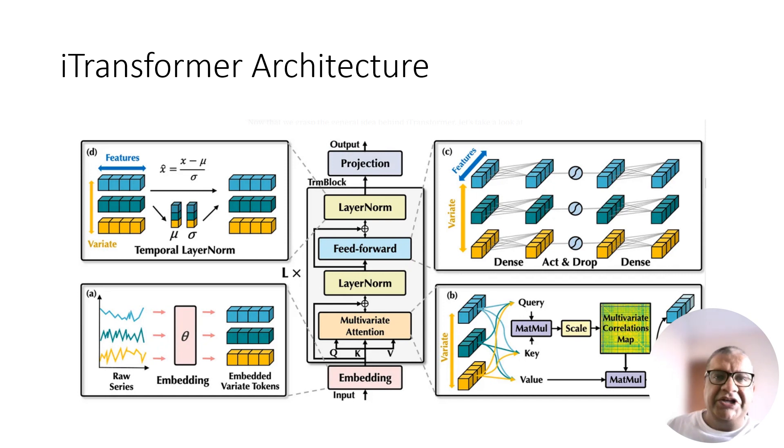Multivariate attention: The embeddings are sent to the attention layer where it will learn a multivariate correlation map. This is possible because the inverted model sees each feature as an independent process. As a result, the attention mechanism learns the correlation between pairs of features, making iTransformer especially suitable for multivariate forecasting tasks.